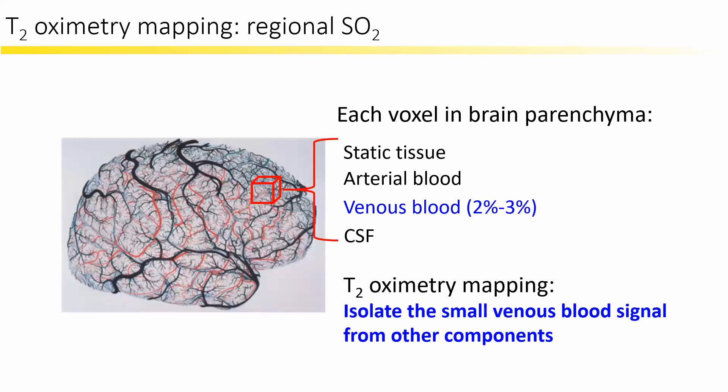T2 oximetry mapping is very challenging. In each voxel, there is static tissue, arterial blood, venous blood, and CSF, and the venous blood fraction is very small. Therefore, the main challenge is to effectively isolate the small venous blood signal.